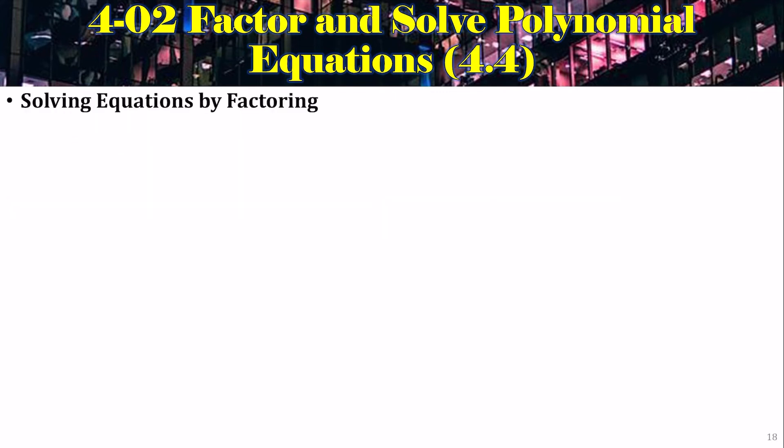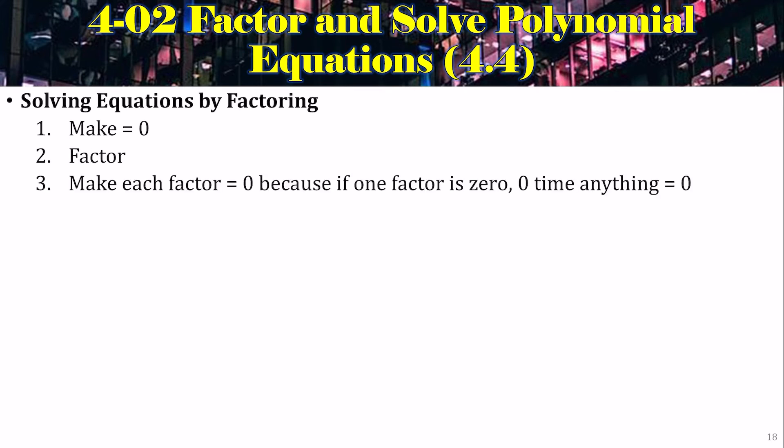Now let's solve equations by factoring. First, make the whole equation equal to 0. Then factor. Then use the zero product property: make each factor equal to 0, because if one factor is 0 then 0 times anything is 0. So: make it equal to 0, factor, set each factor equal to 0.